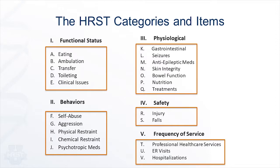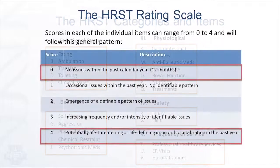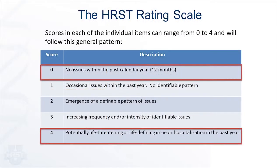Each of the 22 rating items are deliberately chosen to make up the HRST — these are areas where health risk and destabilization are likely to occur in vulnerable populations. The HRST rating key assigns a score that reflects the level of health risk or destabilization detected in each of the rating items. Scores can range from zero to four; the higher the score, the higher the risk.